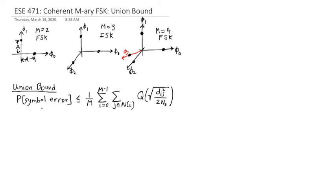So with coherent M-ary FSK, we don't have an exact expression that comes out to be a neat little formula. Instead, I'm going to show you how to use the union bound to come up with an expression for the probability of error.